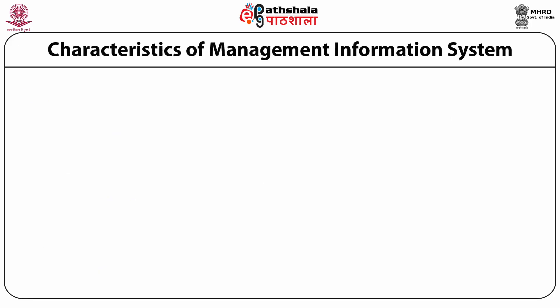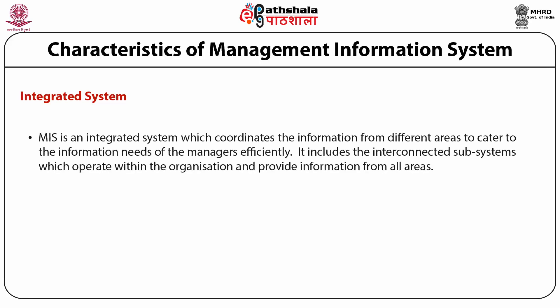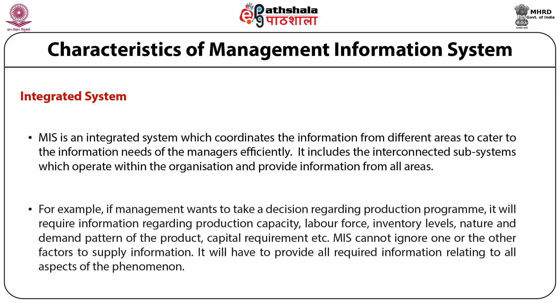The next feature of MIS is that it is an integrated system. MIS coordinates information from different areas to cater to the information needs of managers efficiently. It includes interconnected subsystems which operate within the organization and provide information from all areas. For example, if management wants to take a decision regarding a production program, it will require information regarding production capacity, labor force, inventory levels, nature and demand pattern of the product, capital requirements, etc. MIS cannot ignore any factor — it will have to provide all required information relating to all aspects.